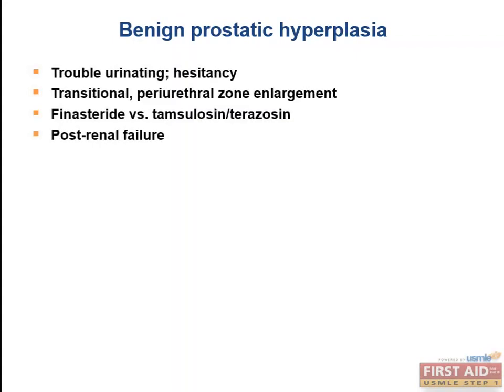With BPH, an older man has trouble initiating or maintaining his stream. It's classically enlargement of the transitional zone/periurethral zone, which explains the urinary difficulty. In contrast, prostate cancer is classically the posterior or peripheral zone — you'd palpate a hard, nodular appearance on digital rectal exam. With BPH, you get a large, smooth prostate affecting primarily the transitional and periurethral zone.